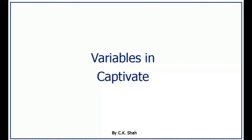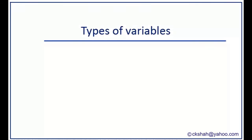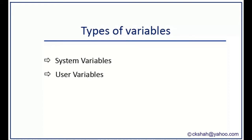There are two types of variables in Captivate: system variables and user variables.